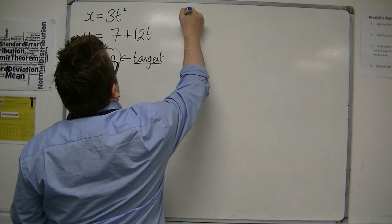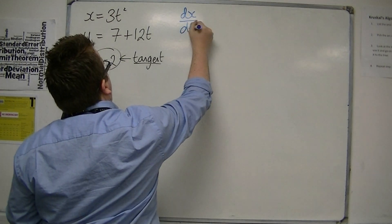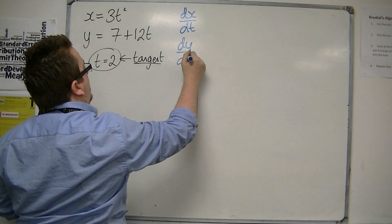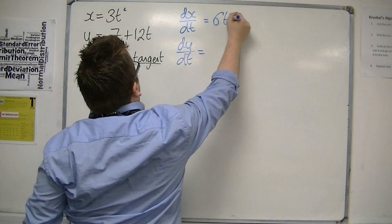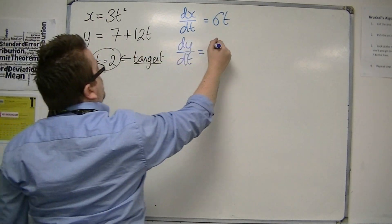So first of all, I want to find dx by dt and dy by dt. So dx by dt is 6t, and dy by dt is just 12.